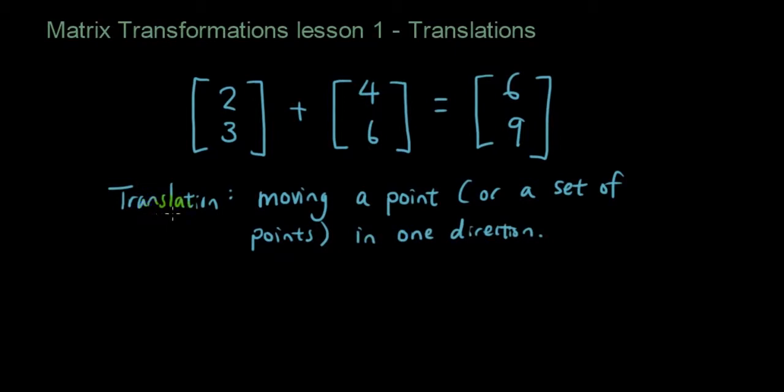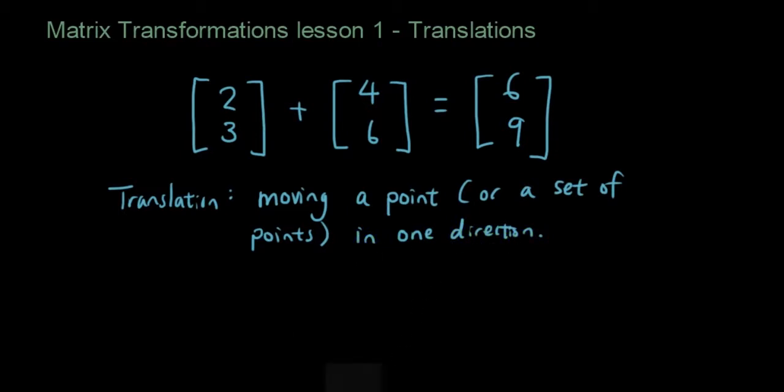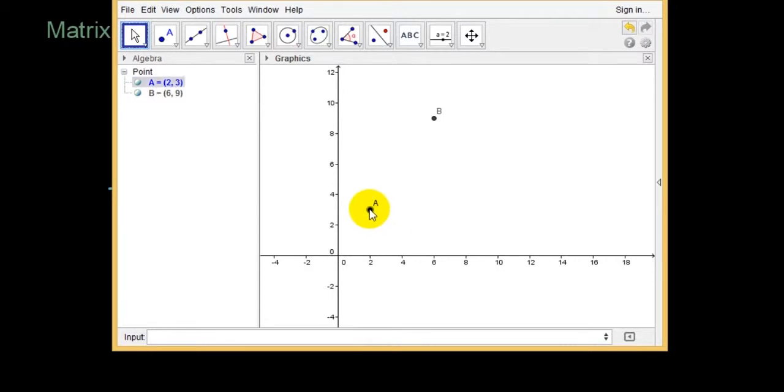So a translation is defined as moving a point or a set of points in one direction. Which is what we have done here. We have moved this point from here. We've moved it in one direction which is this direction and we have moved it up here.